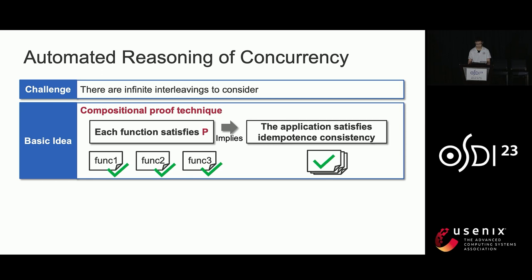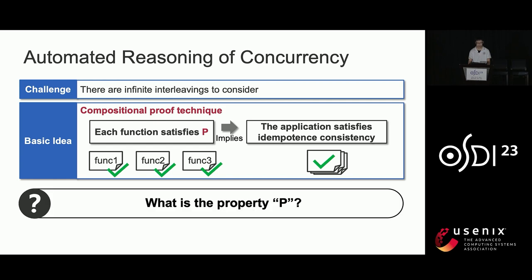Next, I will introduce how to realize automated verification of idempotent consistency. According to the definition, we need to enumerate each execution and prove it is acceptable. However, that is impossible because concurrency introduces infinite interleavings. To reason about concurrency, the basic idea is a compositional proof: if we can prove that each function satisfies some property P, then the whole application satisfies idempotent consistency. The question becomes: what is property P?